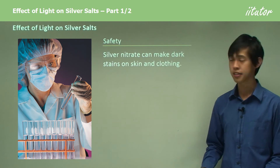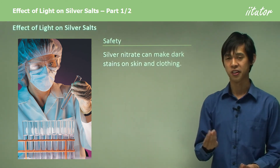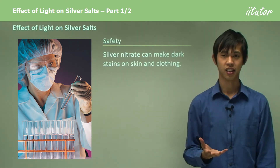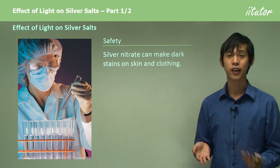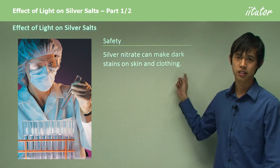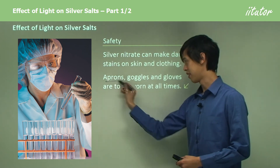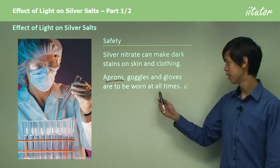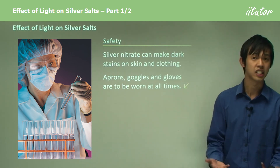For safety: silver nitrate can make dark stains on skin and clothing. Getting silver nitrate on your fingers can leave black stains for at least two or three weeks — not dangerous, but not attractive either. On clothing it lasts even longer and probably won't come out. To avoid this, wear aprons to protect your clothing, goggles to protect your eyes, and gloves to avoid staining your fingers.